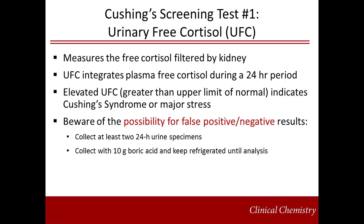The guidelines suggest that any UFC greater than the upper limit of normal be considered elevated. Using the upper limit of normal as the cutoff, UFC may have false positives due to physiological hypercortisolism, as well as high fluid intake. Conversely, false negatives may occur in patients with renal impairment or in those with cyclic Cushing's syndrome. Therefore, it is recommended that there be at least two positive UFC determinations to proceed. When collecting a 24-hour urine for UFC, the sample should be collected with 10 grams of boric acid to maintain acidic pH and be kept refrigerated throughout the collection period.